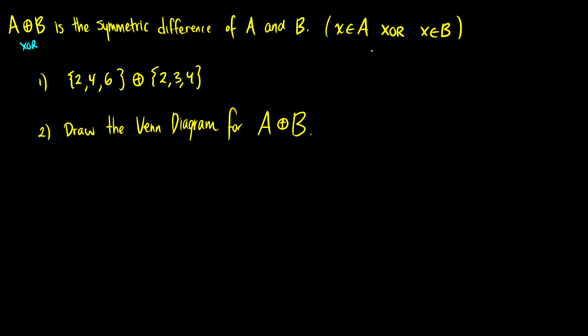So the first one, I want to find the symmetric difference between these two sets: 2, 4, 6 and 2, 3, 4. So this is the set of all elements such that the element only appears in one of the sets. So we see two in both sets, we see four in both sets, but we only see six in the first set and we only see three in the second set. Therefore the symmetric difference is six and three.